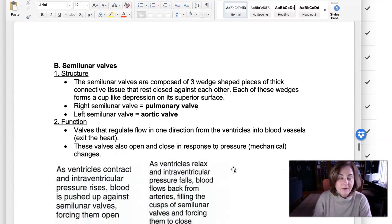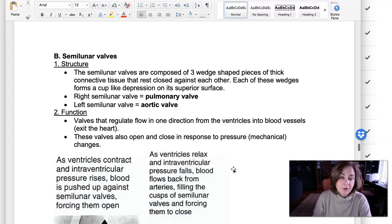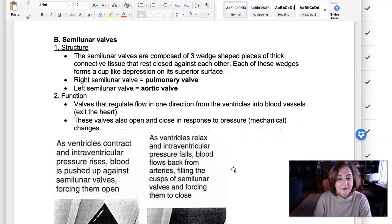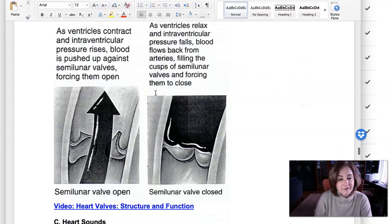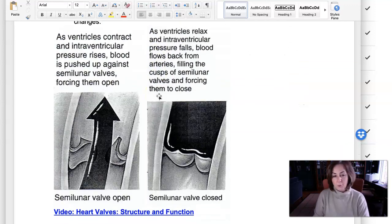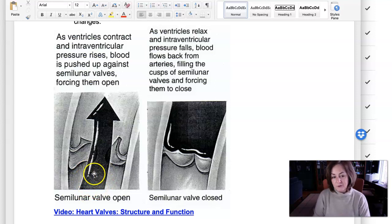Same thing with the semilunar valves that are in between the ventricles and the blood vessel that comes after the ventricle. So I talk about the structure of the semilunar valves. The structure is different. But they work in the same way in that when ventricular pressure exceeds the blood vessel pressure, blood is going to be passively ejected out of the semilunar valves.